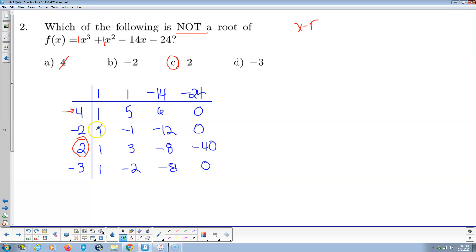Try negative 2. Negative 2 times 1 is negative 2. Plus 1 is negative 1. Negative 2 times negative 1 is positive 2. Added to negative 14 is negative 12. Negative 2 times negative 12 is positive 24. Added to negative 24 is 0. So negative 2 is a root. So not my answer, that's for sure.